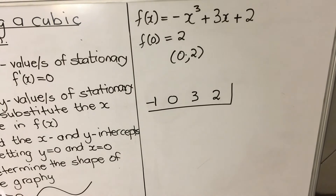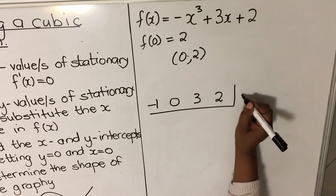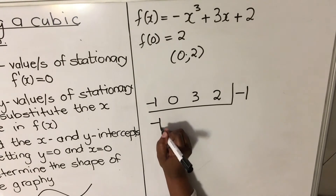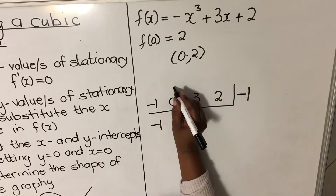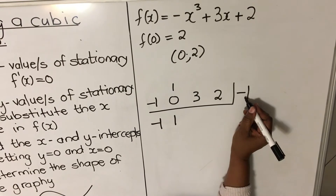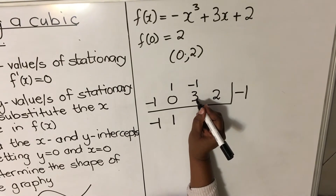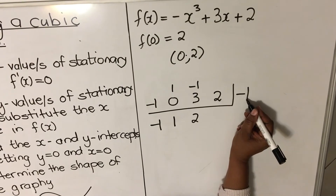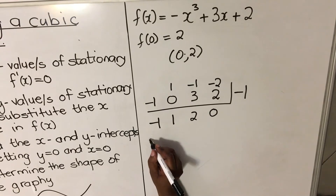x = -1 is the one that works. Write -1, drop the first coefficient (-1). Then: (-1) × (-1) = 1; 1 + 0 = 1; 1 × (-1) = -1; -1 + 3 = 2; 2 × (-1) = -2; -2 + 2 = 0. This confirms x = -1 is a factor.